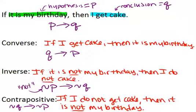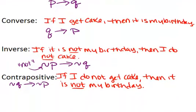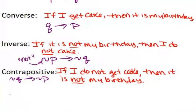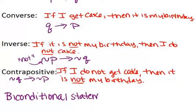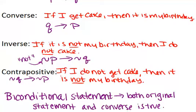Same with the inverse. The contrapositive will always be true if the original sentence was true. And the last thing you need to know is that if both the original sentence and the converse are true, that is called a biconditional statement. That's an 'if and only if' situation. That wasn't true in this example about the cake and the birthday, but it will be true with some mathematical rules and theorems that you will see this year in geometry.